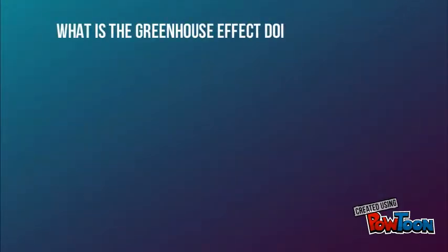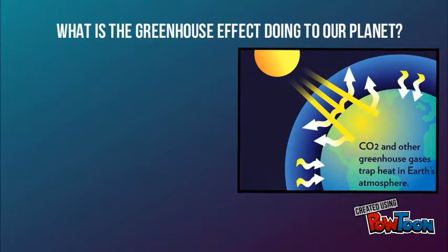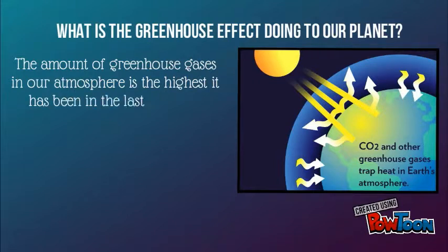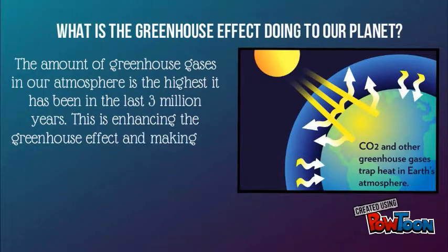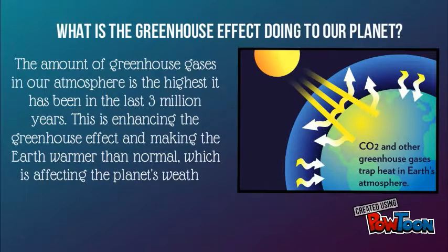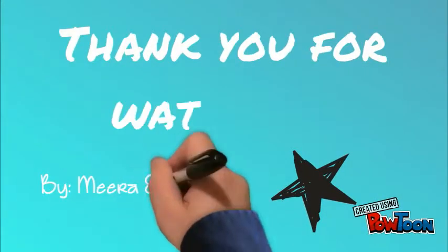What is the greenhouse effect doing to our planet? The amount of greenhouse gases in our atmosphere is the highest it has been in the last 3 million years. This is enhancing the greenhouse effect and making the Earth warmer than normal, which is affecting the planet's weather patterns.